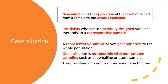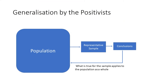Generalization is not possible with non-random sampling, such as snowballing or quota sampling, because the population is not known and they don't study a representative sample. Thus, positivists do not use non-random techniques; they use random techniques which allow them to get a representative sample and subsequently make generalizations. We can represent this idea in a diagram: you have the population from which you draw a representative sample, and the conclusions from that sample hold true for the population as a whole.